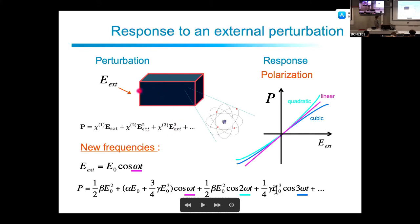The nonlinear terms can show some new frequencies. As long as we look at the linear response, there is no change in frequency — the response is obtained at the same frequency as the perturbation. When we go beyond the first order, we can have new frequencies, which is simple to understand: the perturbation is written as an oscillating electric field going as a cosine at frequency omega.